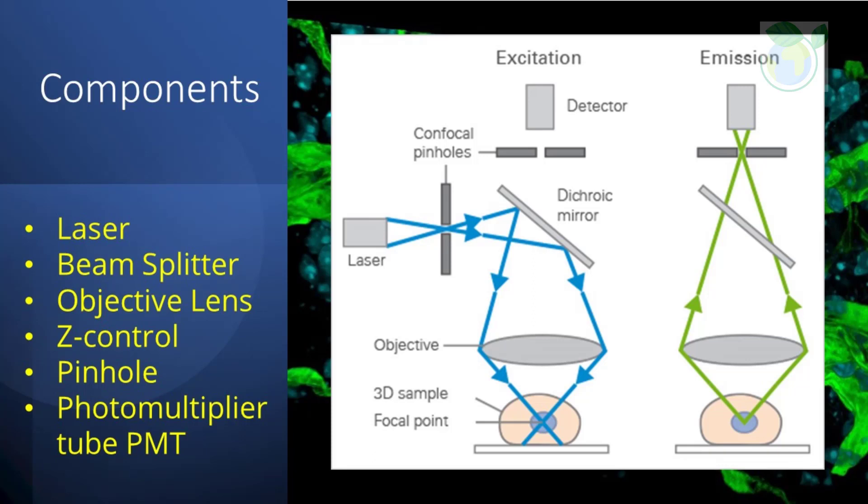Last but not least, the component known as the photomultiplier tube refers to highly sensitive detectors that collect the photons emitted by your sample. They basically transform the light signal into an electrical one that is recorded by a computer.